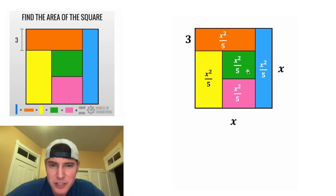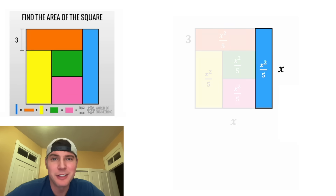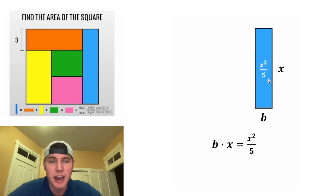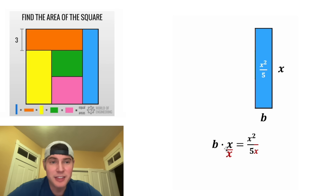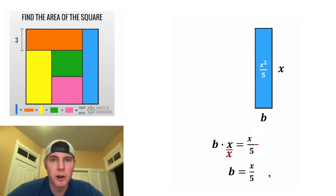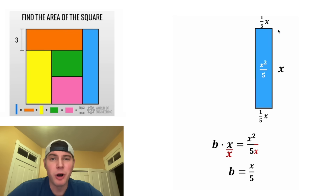For the next step, out of all of these rectangles, the blue one is the only one that has X entirely as one of its sides. So let's focus on that one. We already know that the height is X. Let's call the base B. We know that B times X equals X squared over five. Dividing both sides by X, these cancel, so B equals X squared over X, which gives us B equals X over five, or one fifth X. So let's change this B to one fifth X, and the same thing for the top — it will also be one fifth X.